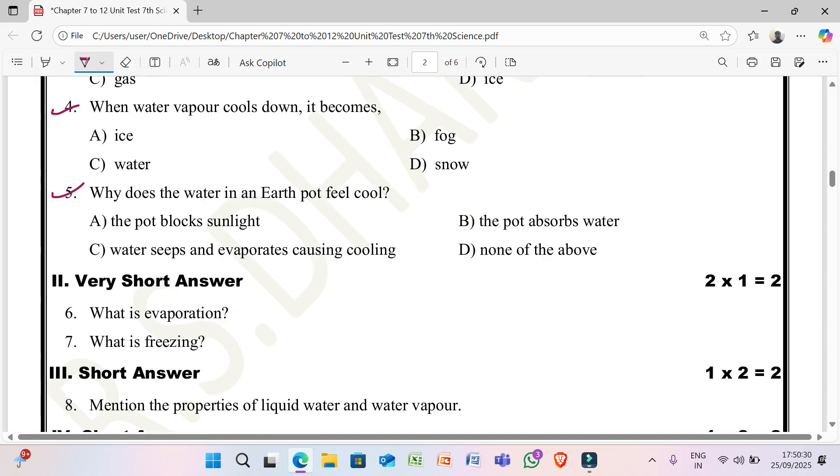Fifth question: why does the water in an earth pot feel cool? A) the pot blocks sunlight. B) the pot absorbs water. C) water seeps and evaporates causing cooling. D) none of the above.